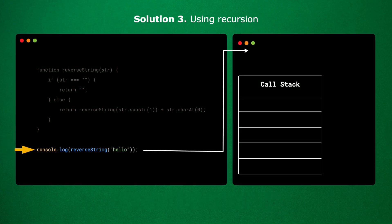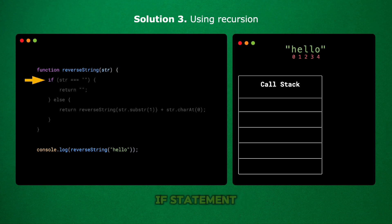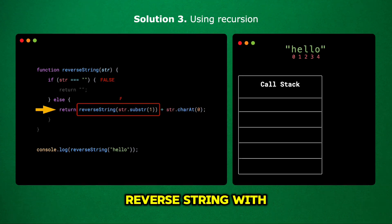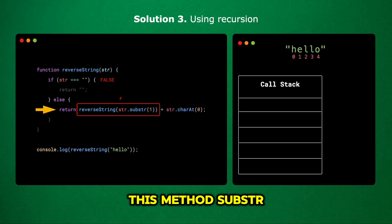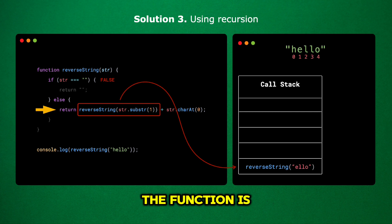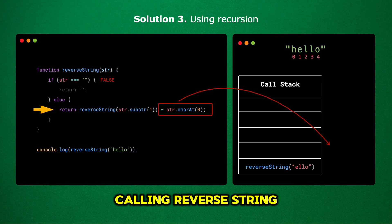When we call reverseString, the function starts with the string 'hello'. First, it checks if the string is empty using the if statement. Since the string is not empty, it skips the if block and goes to the else part. Here it makes a recursive call — reverseString with the input str.substr(1). This method, substr(1), removes the first character, which is the letter 'H' from 'hello', leaving us with 'ello'. The function is now waiting for the result of calling reverseString with 'ello' before it can finish.